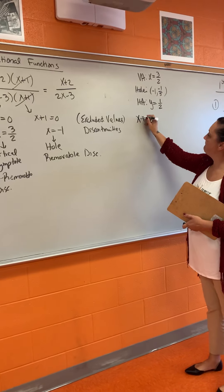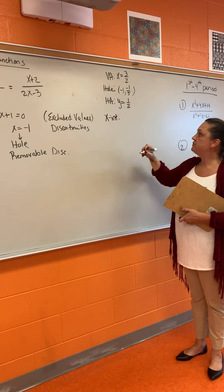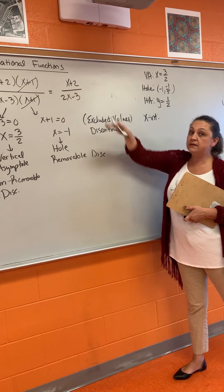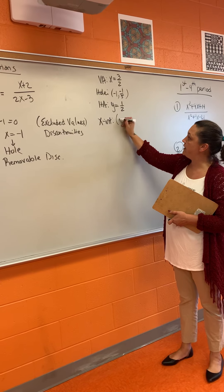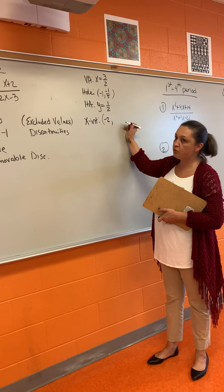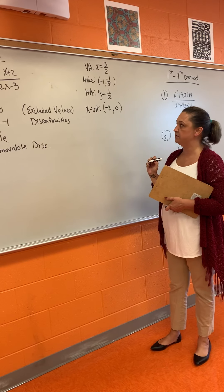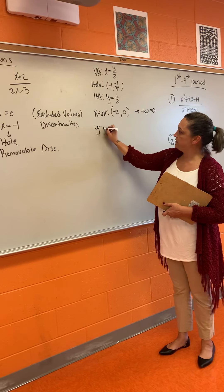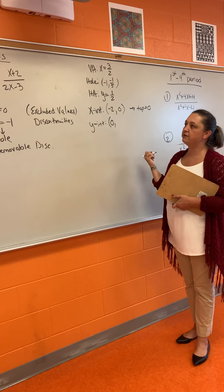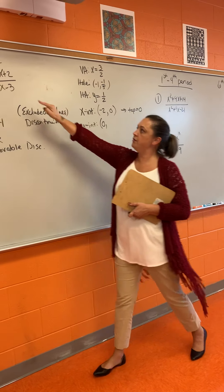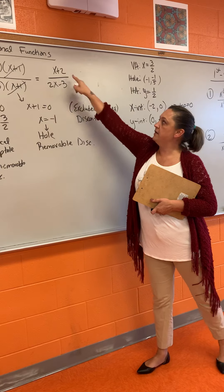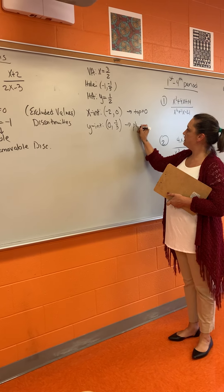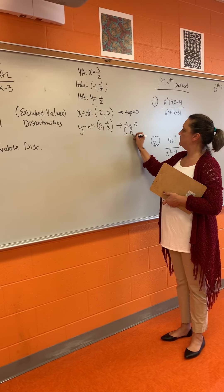Next, the x-intercept. For the x-intercept, you take the top of your reduced fraction and set it equal to 0. When x + 2 = 0, you get x = −2, so the x-intercept is at (−2, 0). For the y-intercept, you plug 0 in for x. Plugging 0 into the reduced function gives −2/3, so the y-intercept is at (0, −2/3).